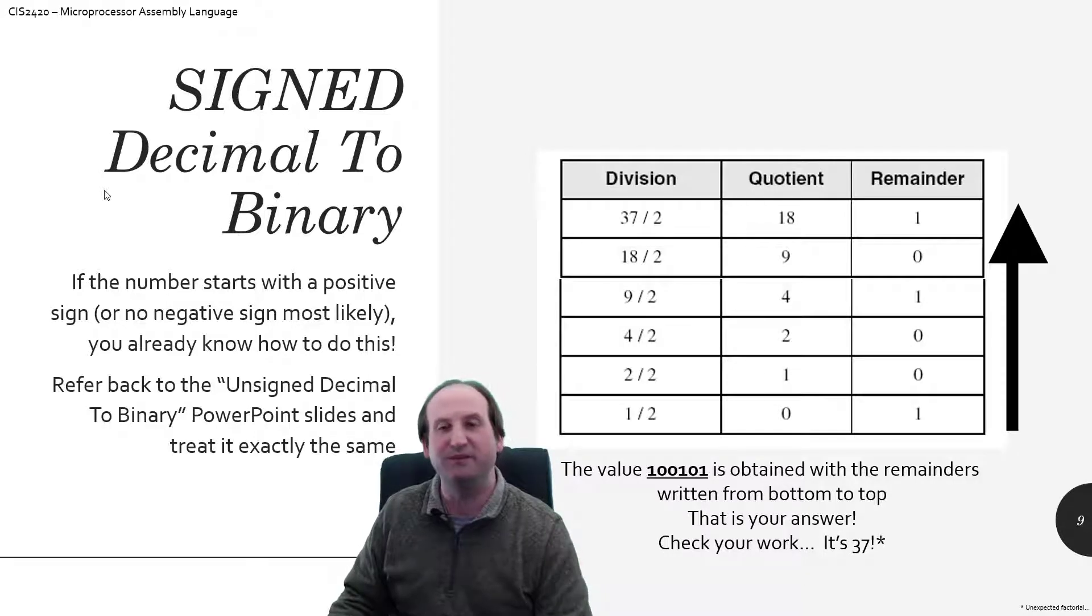Now, working our way backwards, if I'm given a decimal number in signed format, how do I convert that into binary? We've already done the algorithm, we've seen this in the unsigned lectures twice over, once for converting from decimal to binary, once for converting from decimal to hexadecimal. So you're familiar with this.